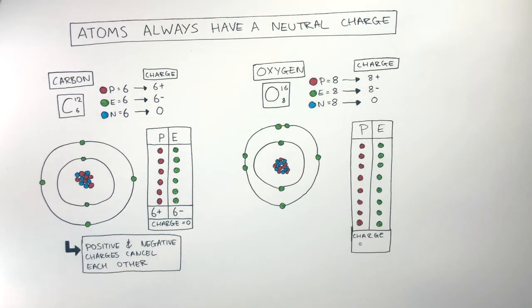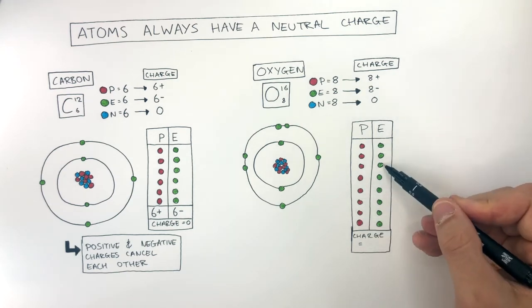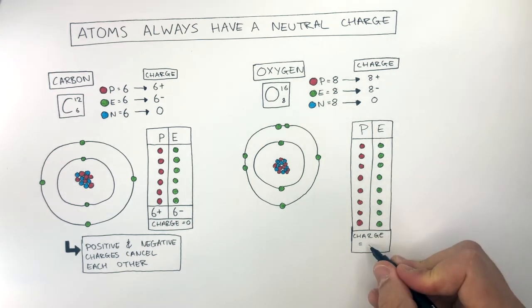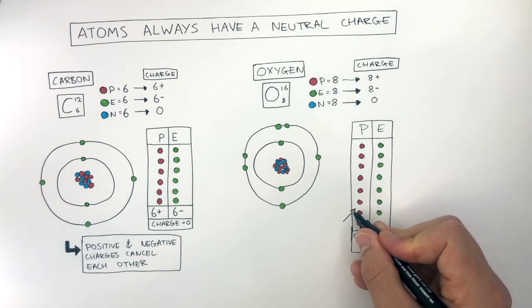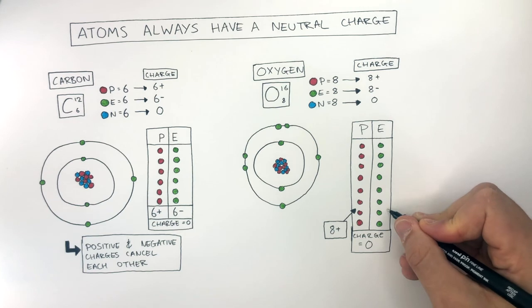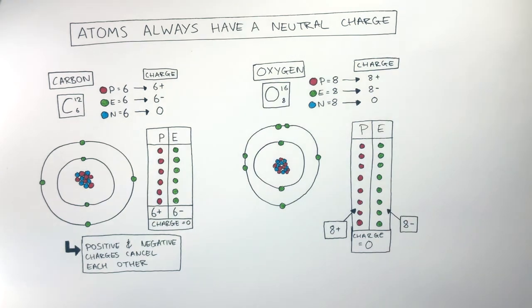If we show this in a table, we can see there are 8 protons and 8 electrons. Therefore, the charge is 0. As 8 protons gives a charge of 8+, and 8 electrons gives a charge of 8-. Together, this equals a charge of 0.